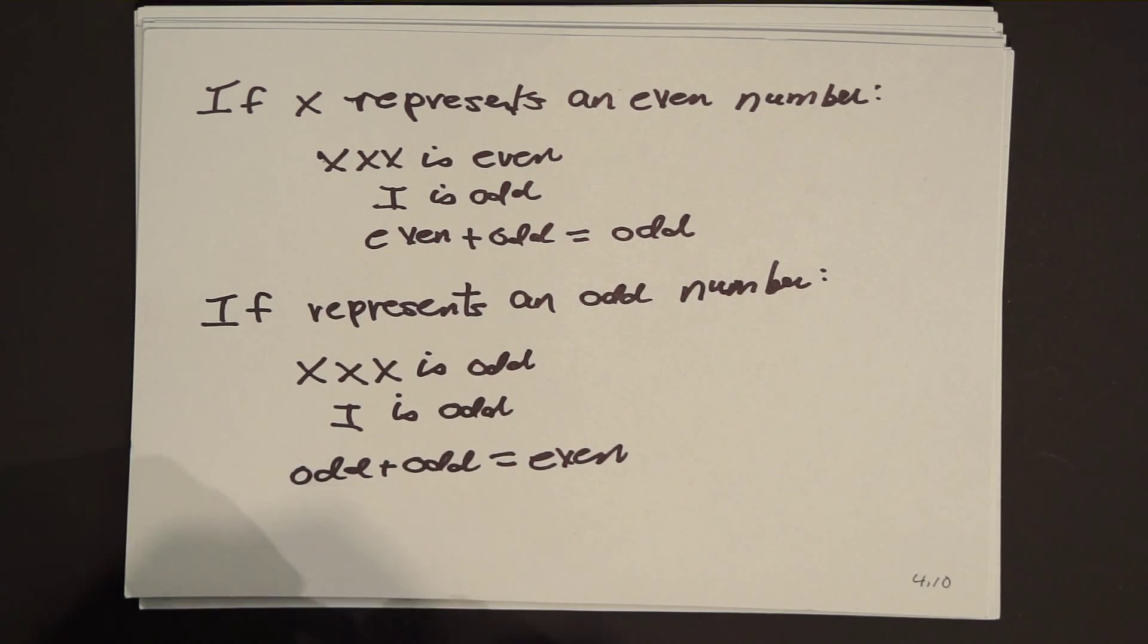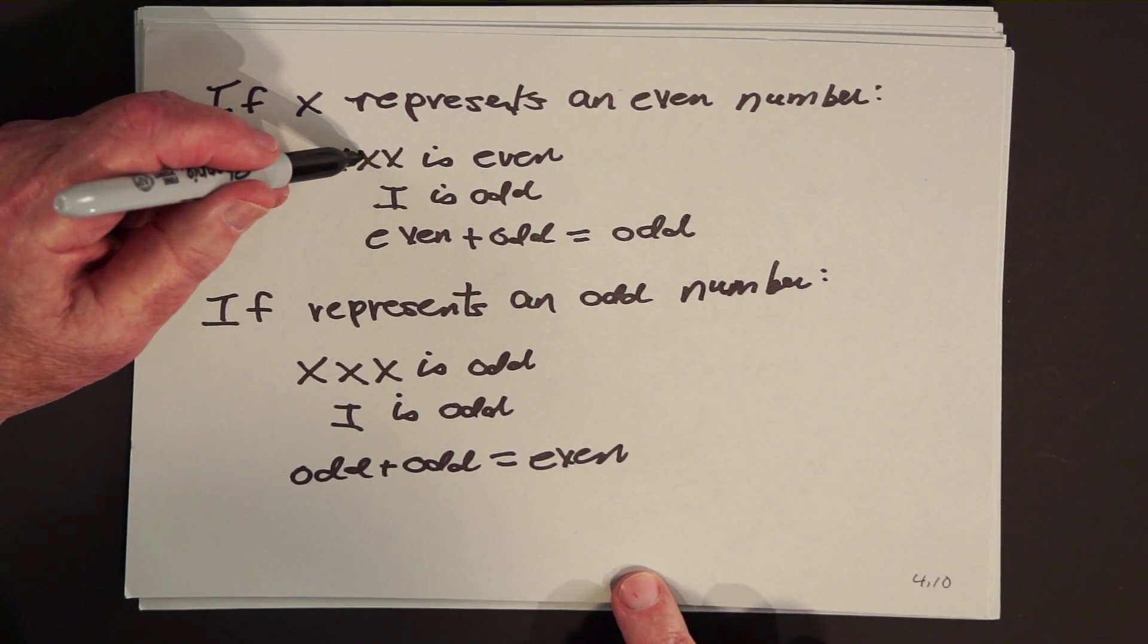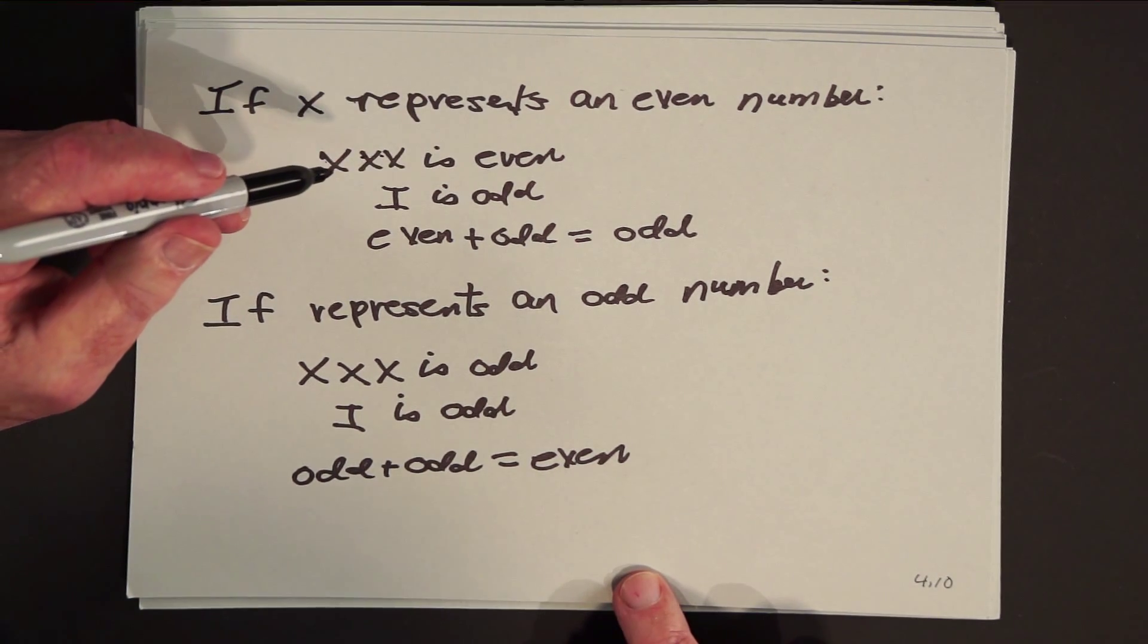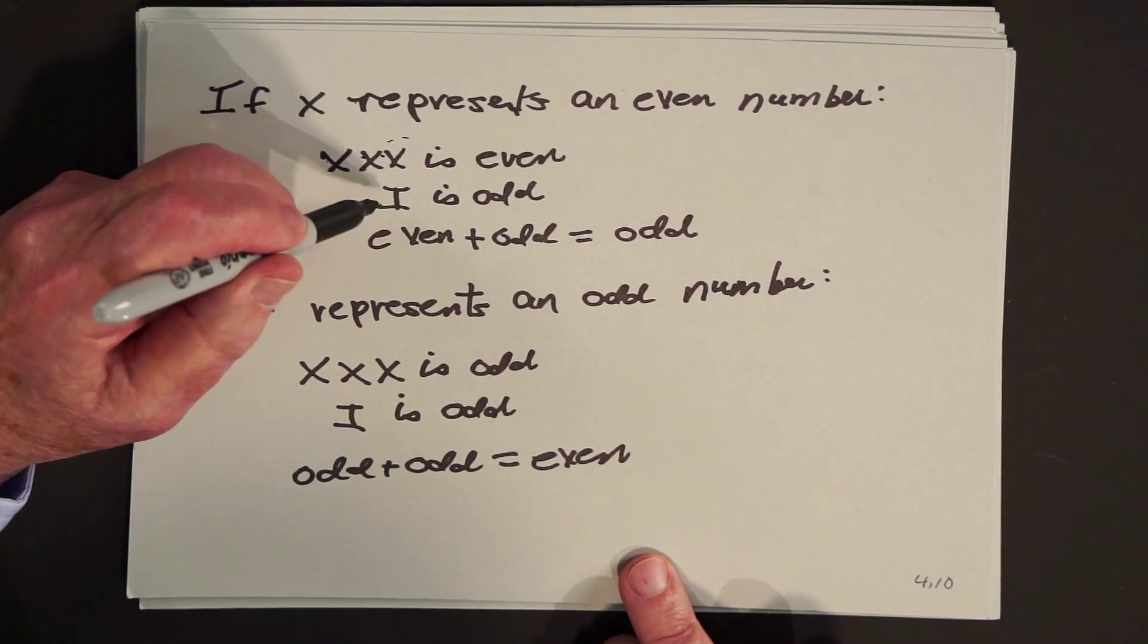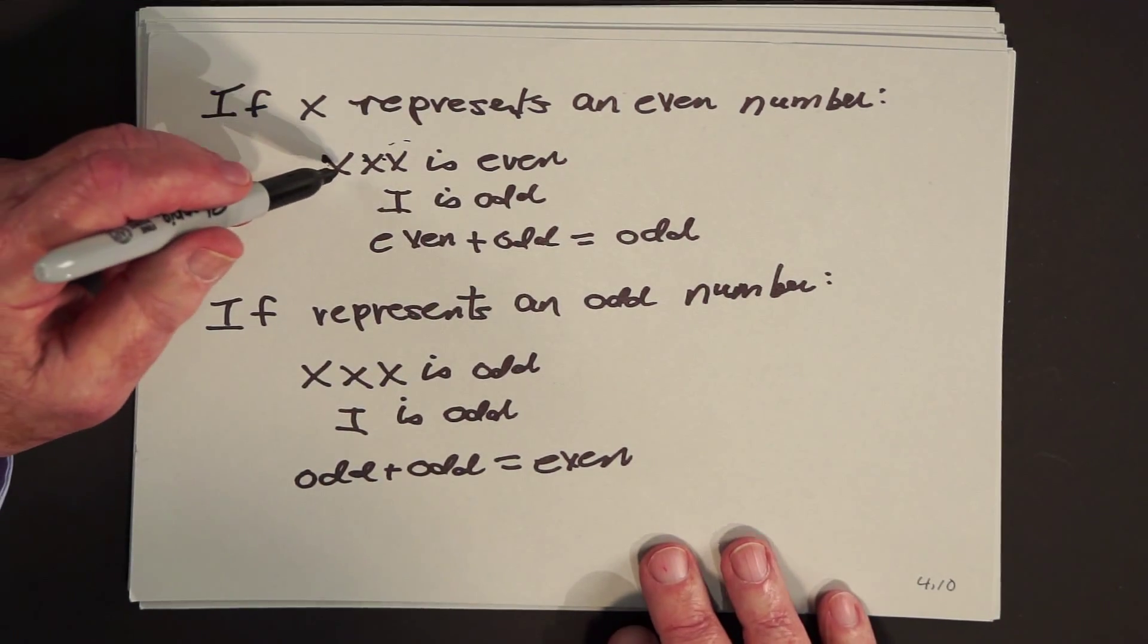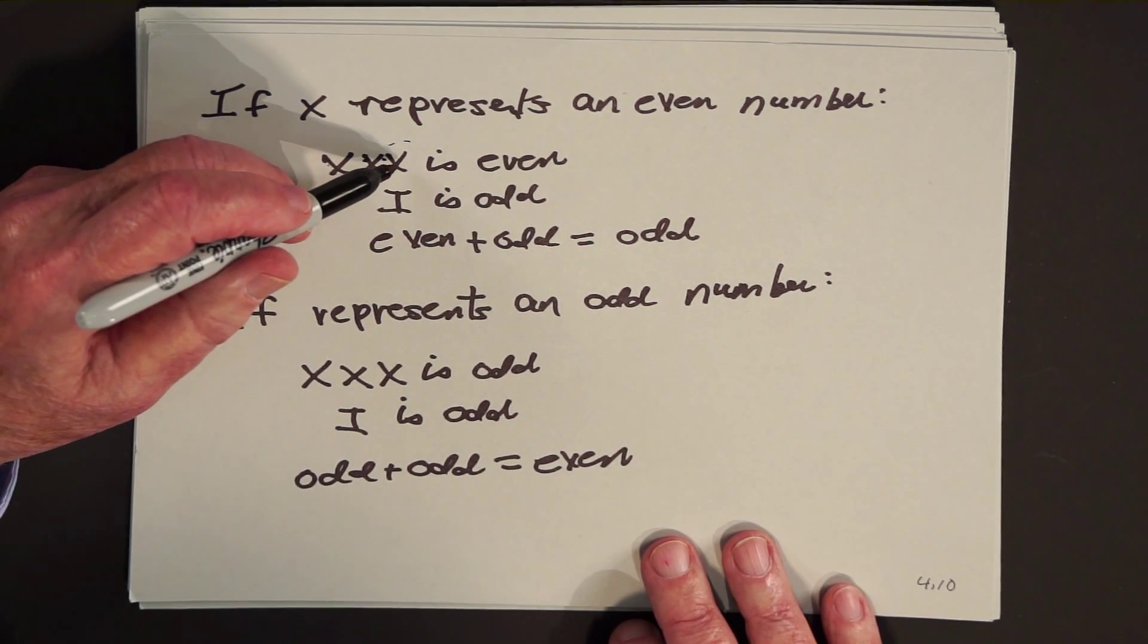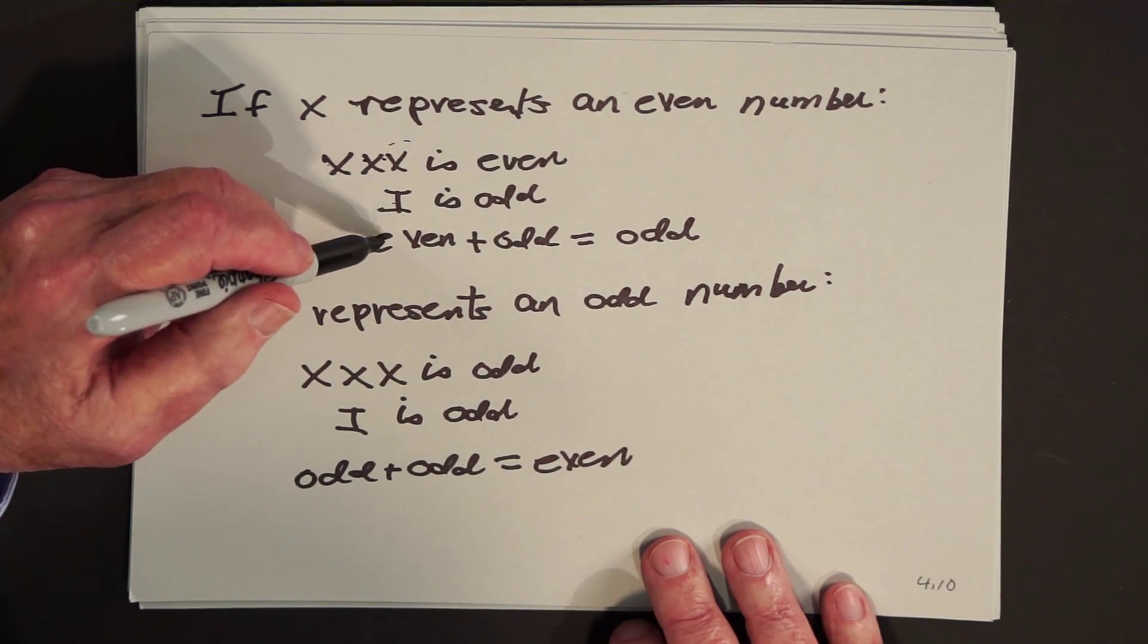See, look what happens. If X represents an even number, even plus even is even. Even plus odd is still even. So this is an even number. 1 is an odd number. Even plus odd is an odd number. In other words, if X stood for 4, 4 plus 4 plus 4 is 12. That's an even number. Plus 1 is an odd number. It's 13.